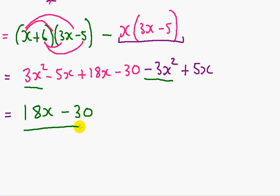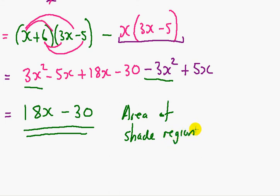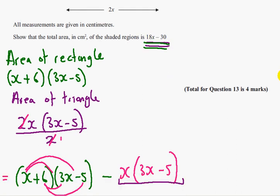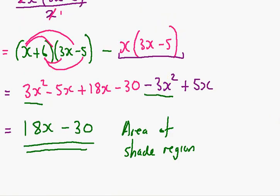And you've also got the minus 30. So that is the final answer. That is the area of the shaded region, which we had to show was 18x minus 30, which is here. So we've done that and we've finished.